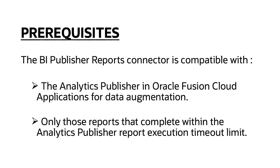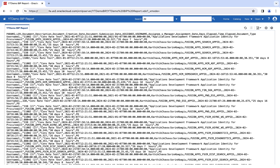These are the current prerequisites to be noted to ensure the success of the configuration. Let's proceed to the configuration process. This is a sample BI Publisher report in CSV output format in an Oracle Fusion application instance, which we will be using for this demo.